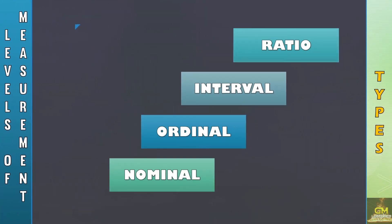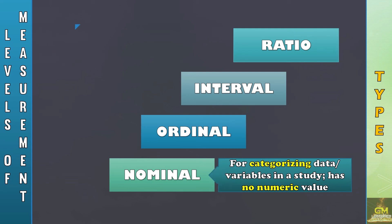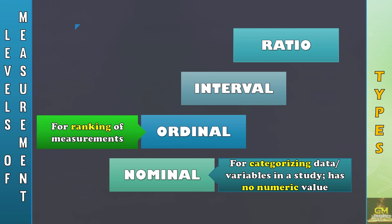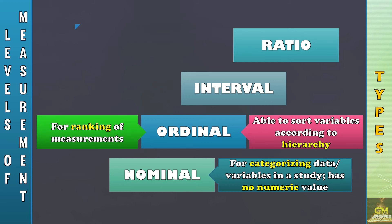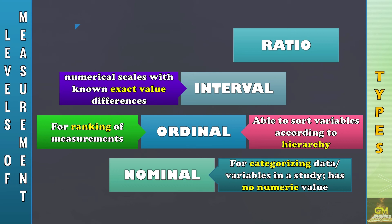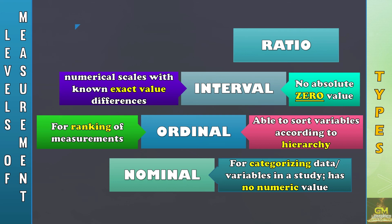Before we end the discussion, let's have a short recap. The nominal level of measurement is used for categorizing data or variables in a study. It is also worth noting that the nominal level of measurement has no numeric value. The ordinal level of measurement is used for ranking of measurements as well as sorting variables according to hierarchy. The interval level of measurement recognizes numerical scales with known exact value differences. Also, the interval level of measurement has no absolute zero value.